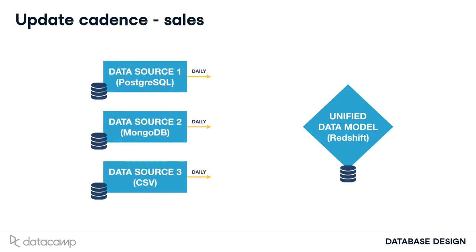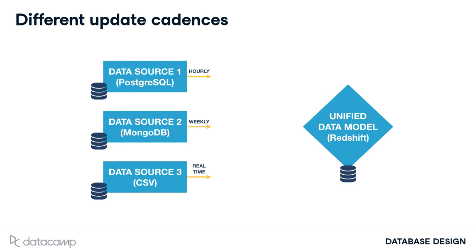How often do you want to update the data? Updating daily would probably be sufficient for sales data. For a scenario like air traffic, you want real-time updates. Your data sources can have different update cadences.